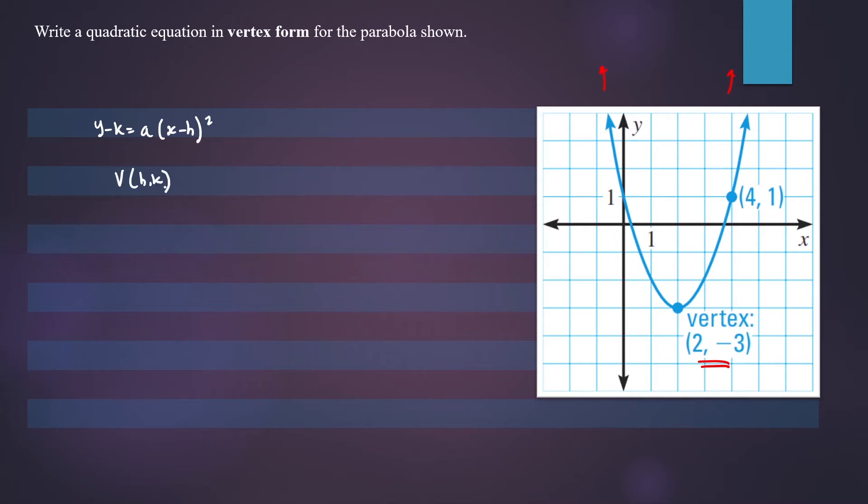And we're given that in the question. So the vertex is (2, -3). So we can substitute those numbers to our standard form. We have y minus k, and k is -3, so that would become y plus 3 equals a times (x minus h), and h is 2, so x minus 2 all squared.